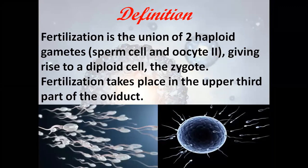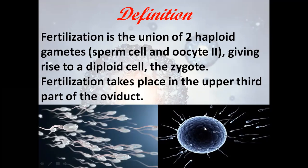First of all, what is fertilization? Fertilization is simply the union of the male and female gametes — these haploid gametes, the sperm and the ovum. Whenever they meet, the sperm cell and oocyte 2, they give rise to a diploid cell.